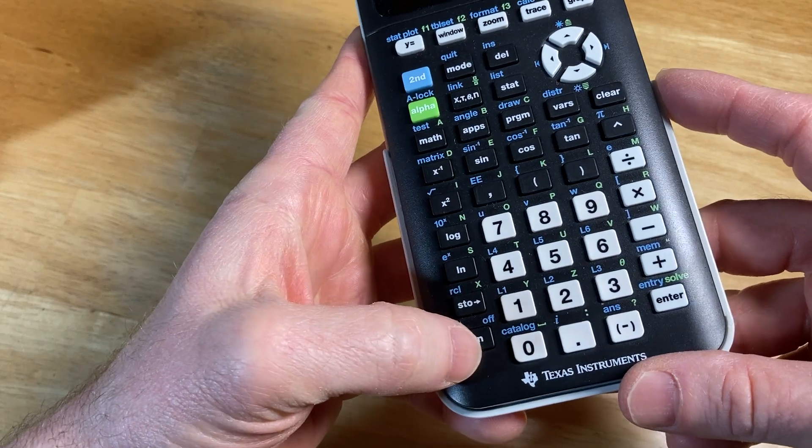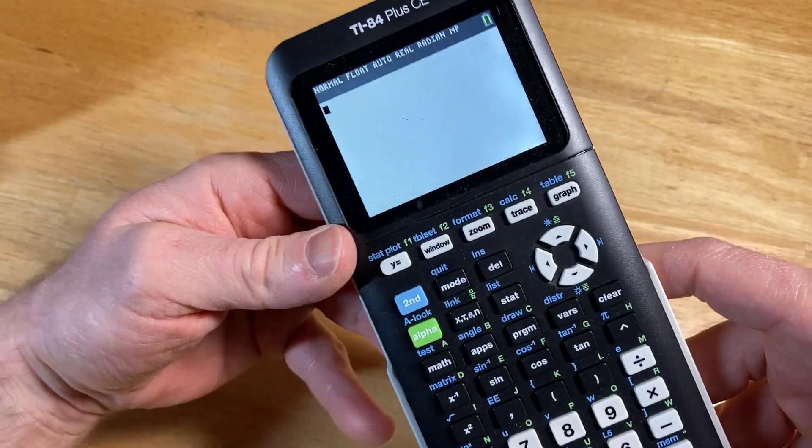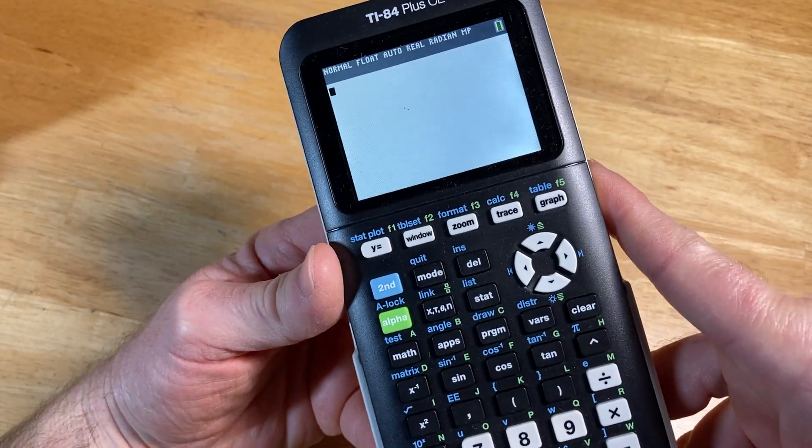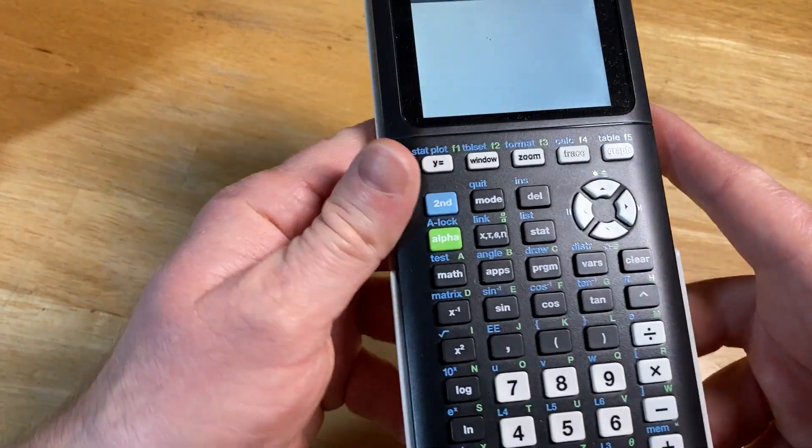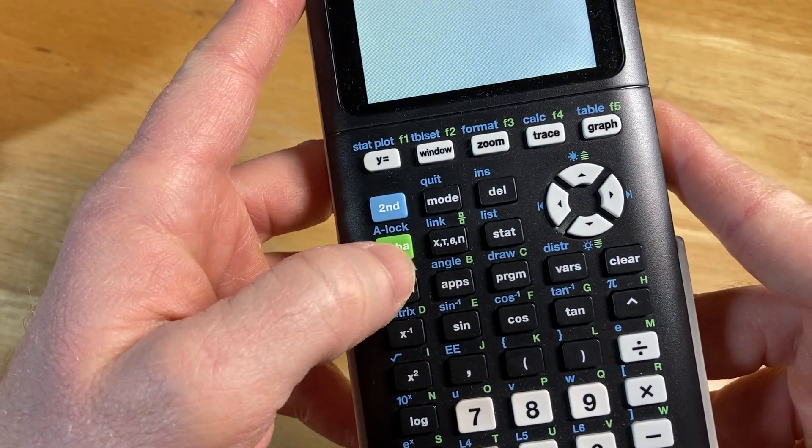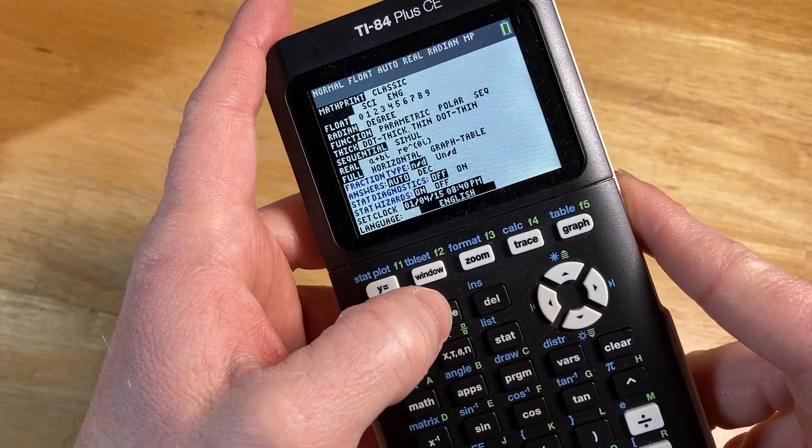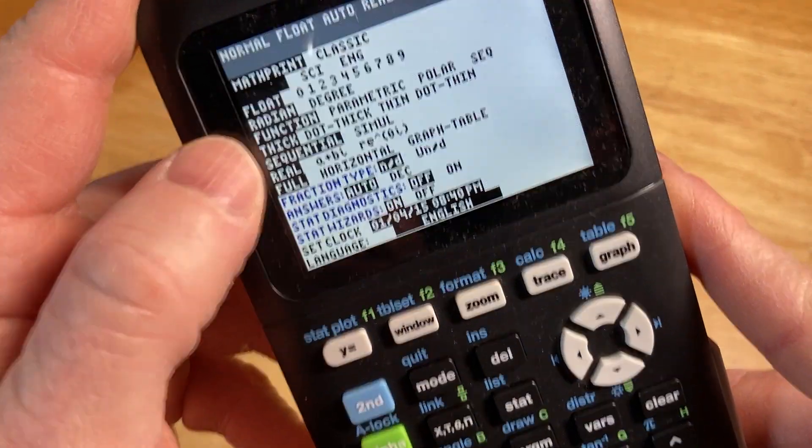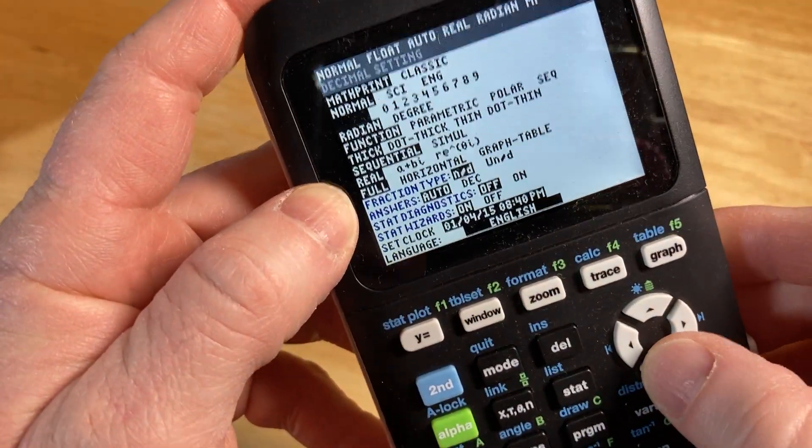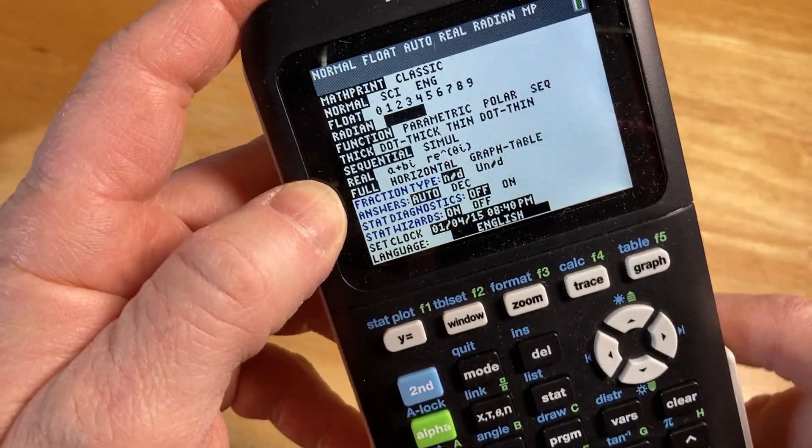I'm going to go ahead and turn it on by pressing the on button. In order to access the menu where you can go back and forth between radian and degrees, you want to press mode right here. Here it says radian and here it says degrees. It's already in radian, so let's go to degree and press enter.